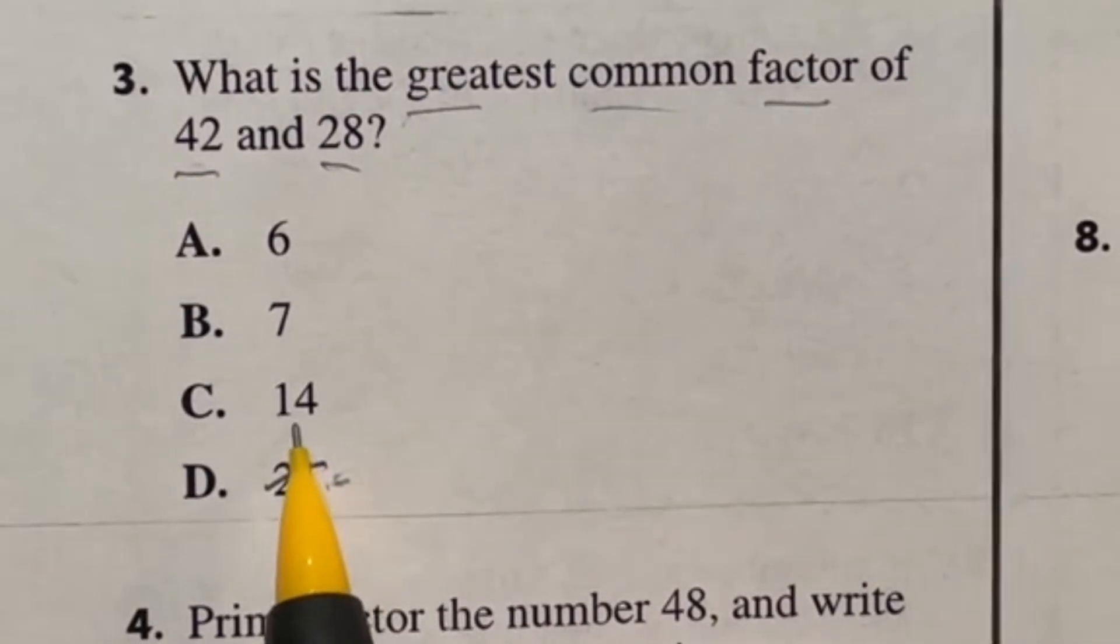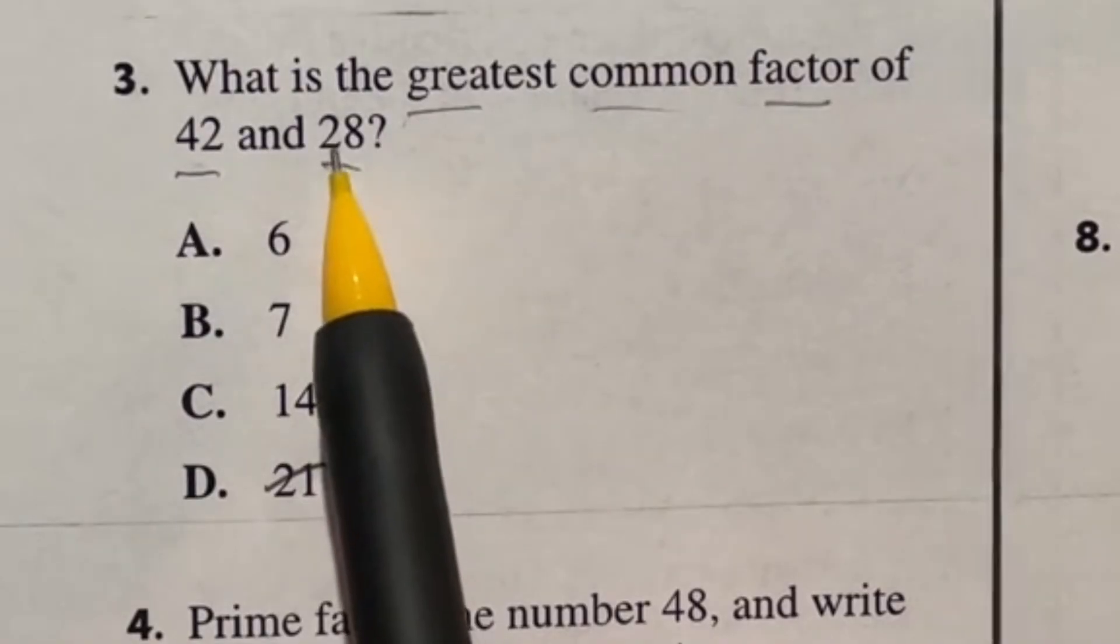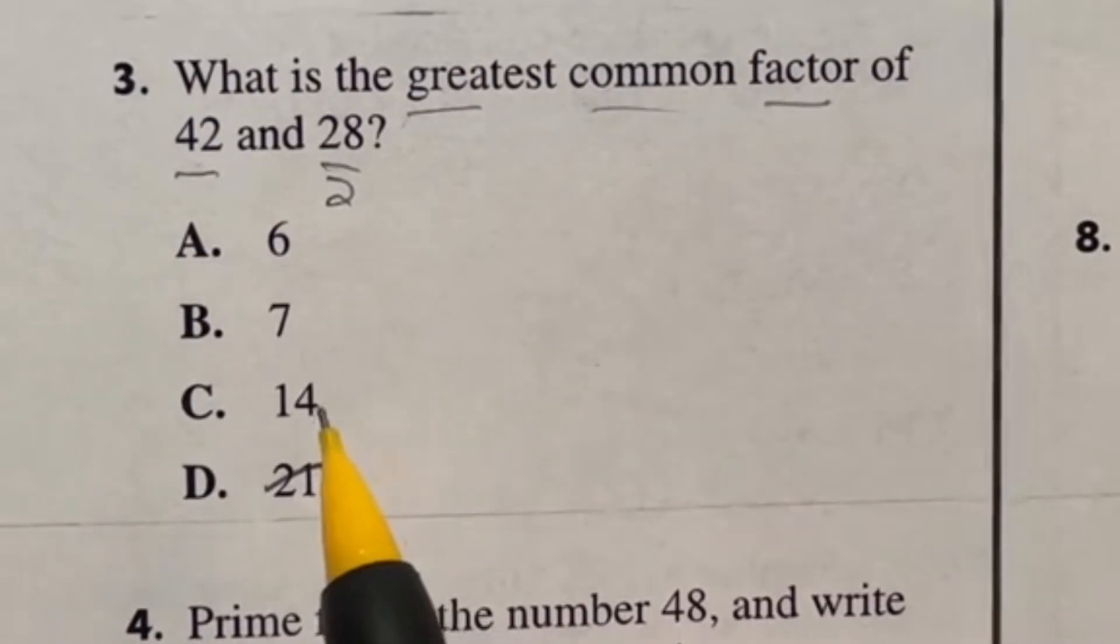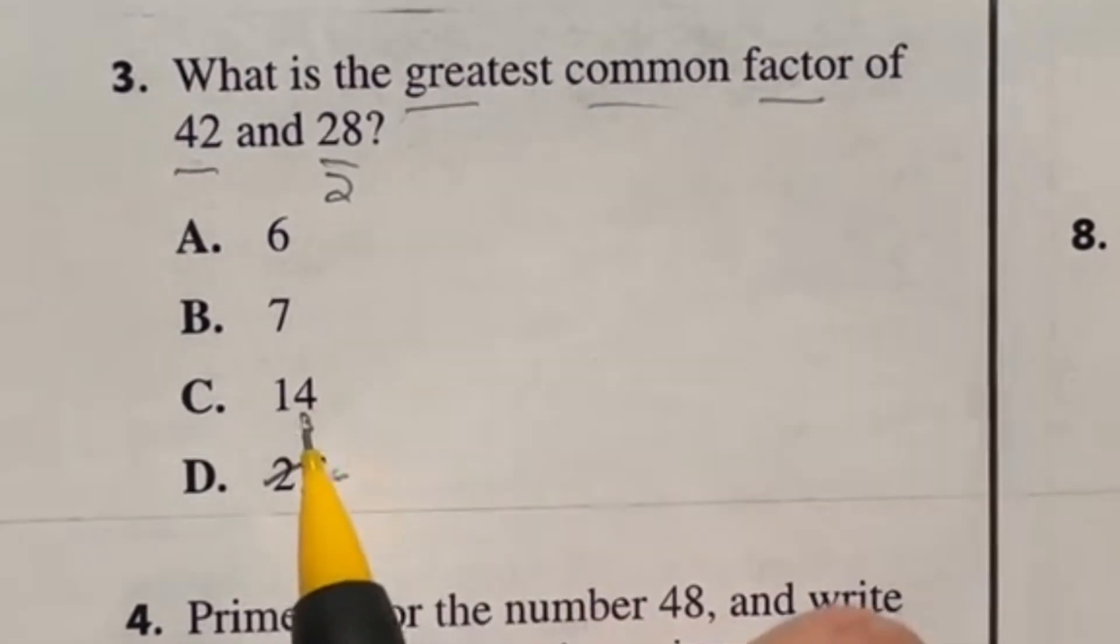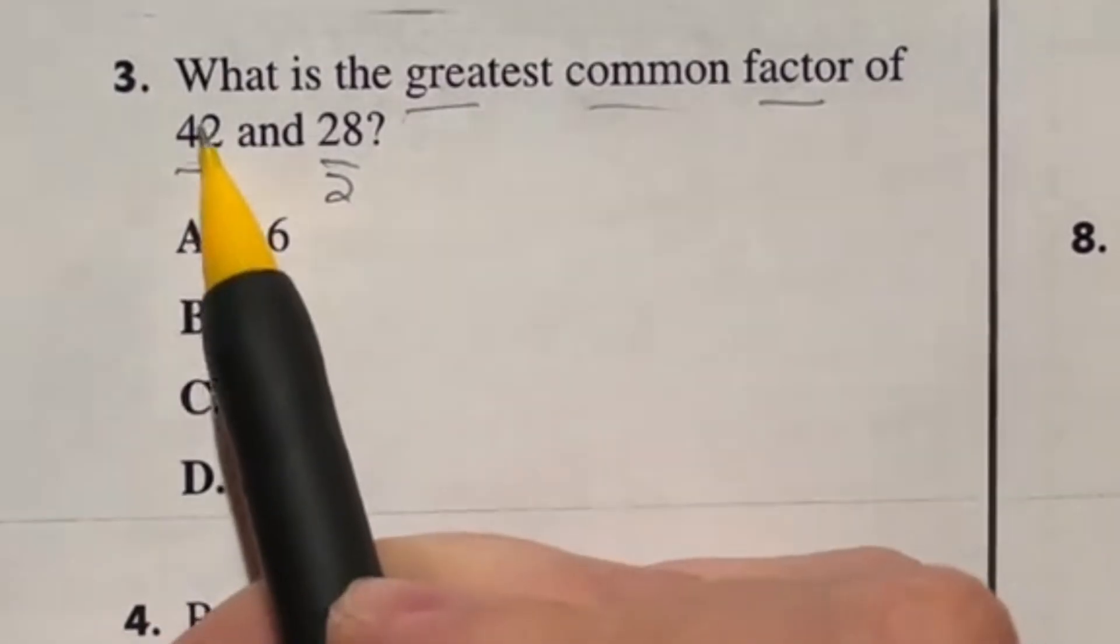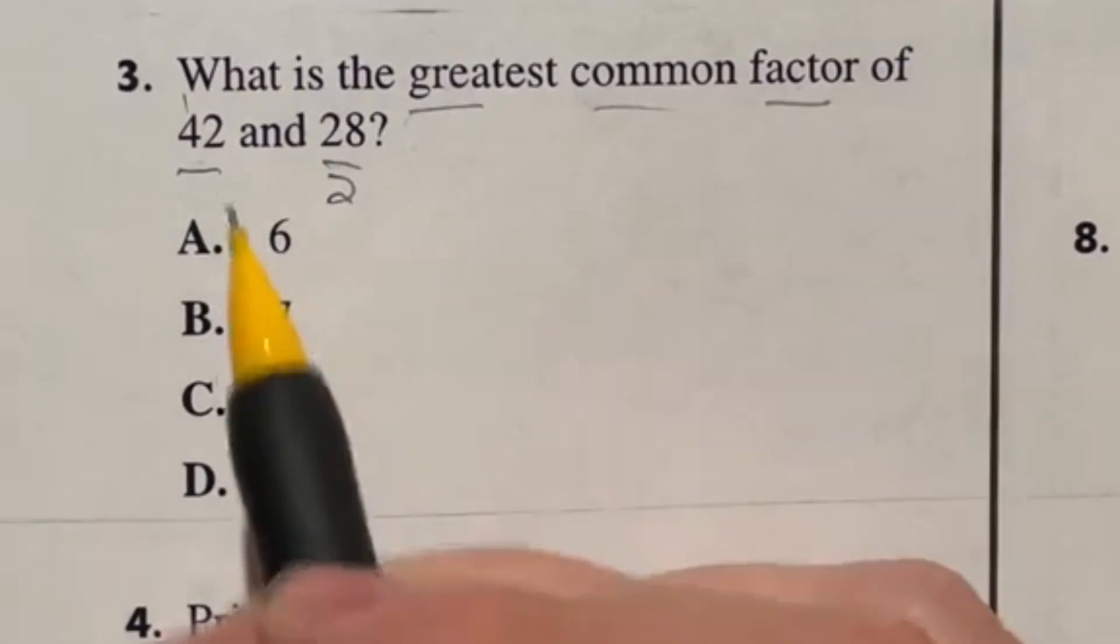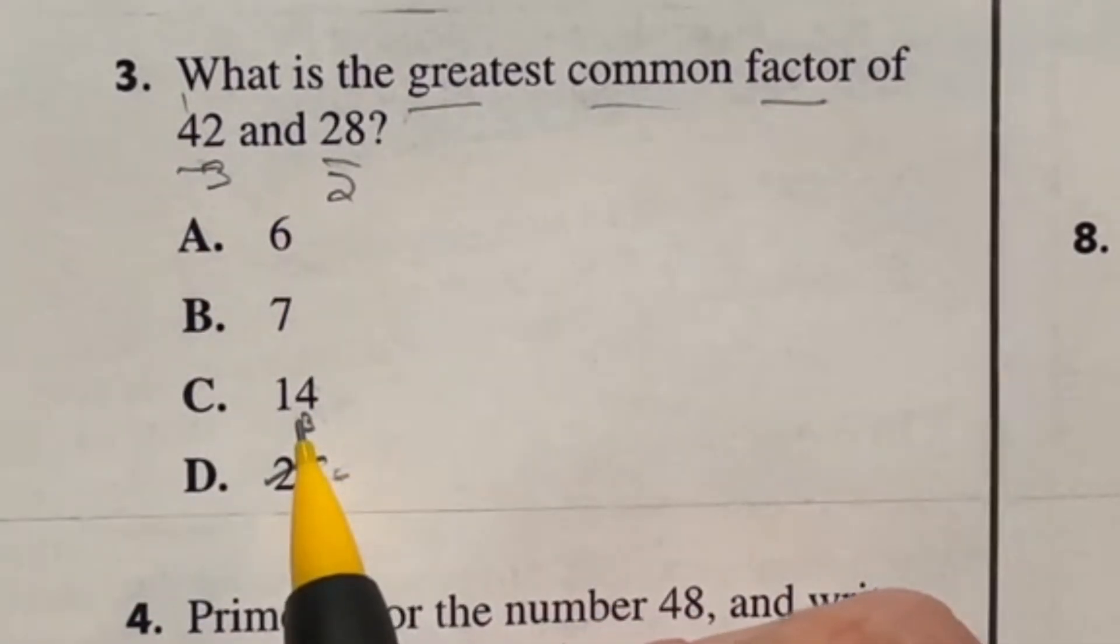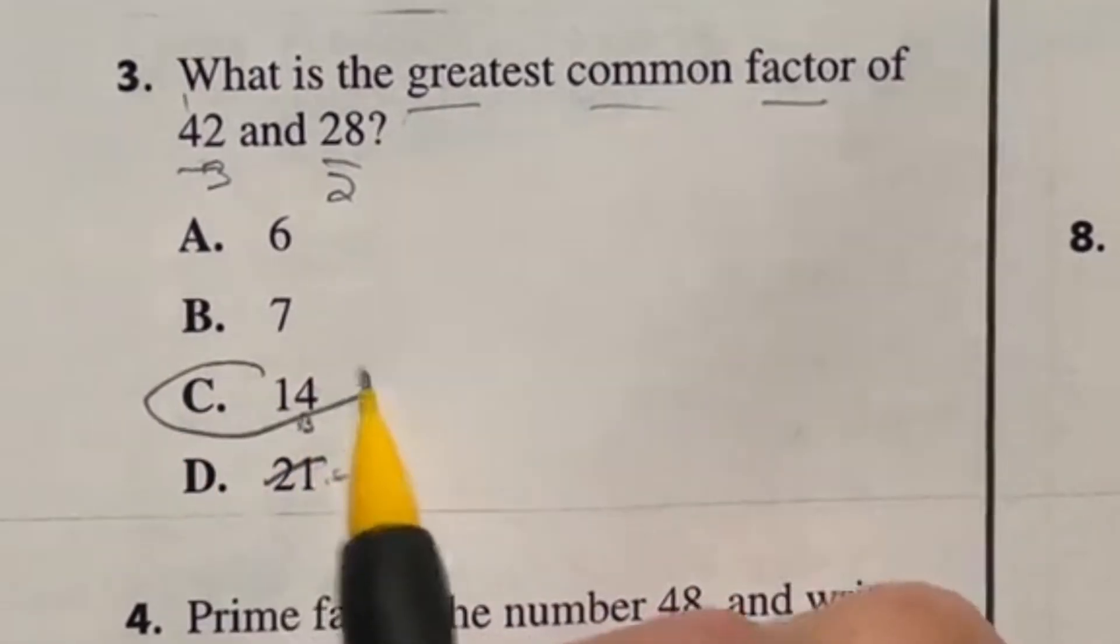Let's take a look at 14. 14 goes into 28 twice, and 14 goes into 42. Does it go into 42? I think, let's see, if we multiply by three, four times three is 12, carry the one, three times that, so it does indeed go into 42 three times. So 14 is going to be the largest number that divides both. Our answer here is C.